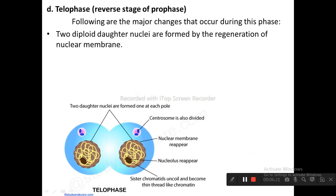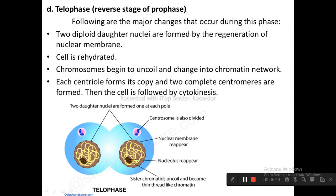The third stage is telophase, which is the reverse stage of prophase. The major changes in telophase are: two diploid daughter nuclei are formed by the regeneration of the nuclear membrane; the cell is rehydrated; chromosomes begin to uncoil and change into chromatin network; and each centriole forms its copy so two complete centrosomes are formed. The cell is then followed by cytokinesis. Two daughter nuclei are formed, one at each pole; nuclear membrane and nucleolus reappear; sister chromatids uncoil and become thin chromatin fibers.